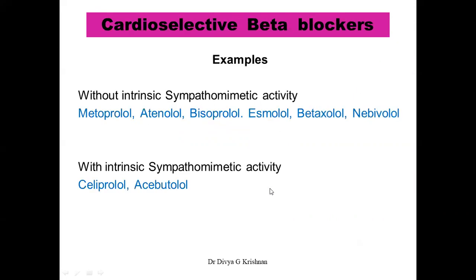The examples I have already discussed in the previous part under the classification. Without intrinsic sympathomimetic activity: metoprolol, atenolol, bisoprolol, esmolol, betaxolol, and nebivolol — you have to learn these examples by heart. With intrinsic sympathomimetic activity, the examples are celiprolol and acebutolol. These are the examples of cardioselective beta blockers.